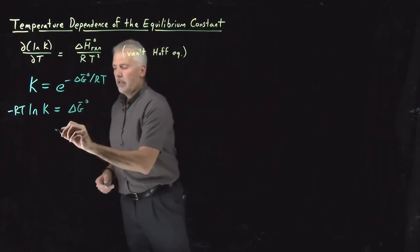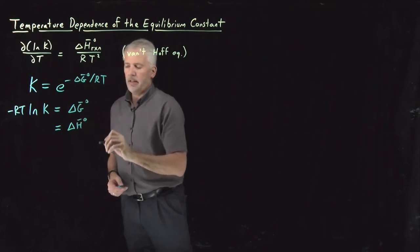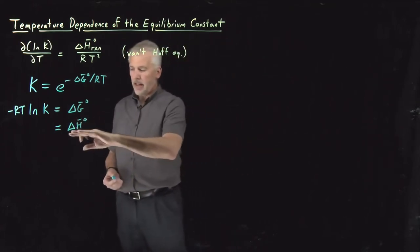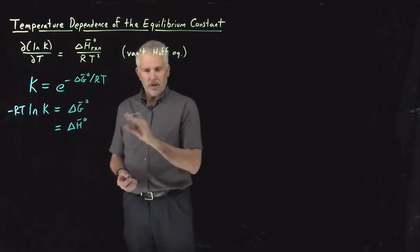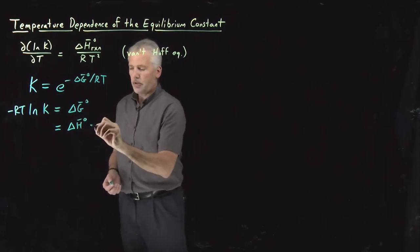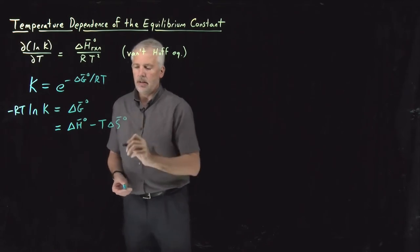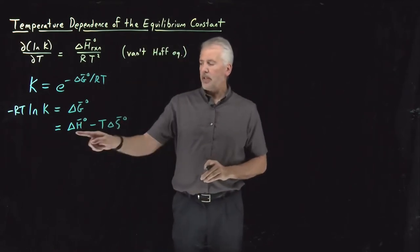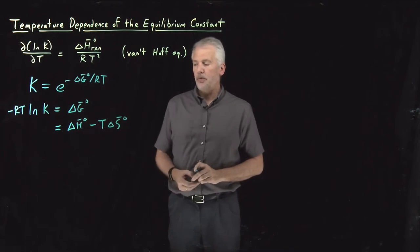ΔG has two parts — an enthalpy term and an entropy term. Delta H minus T delta S is the change in the Gibbs free energy.